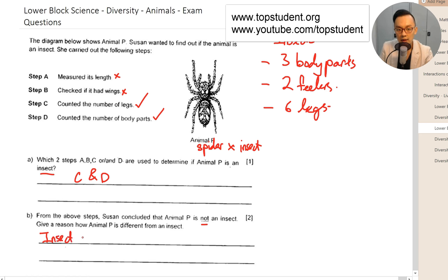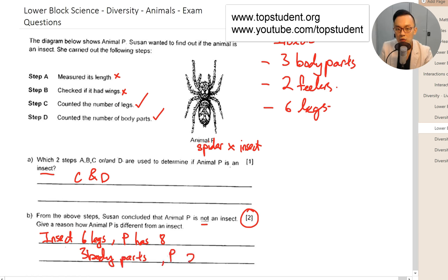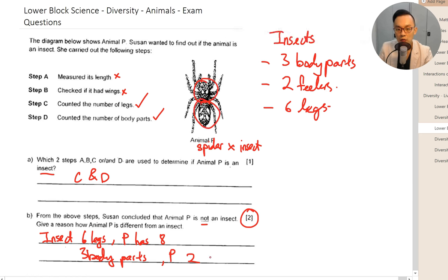Give a reason how animal P is different from an insect. This is a two-mark question, so you need to give two points. First: an insect has six legs, but animal P has eight legs. Second: an insect has three body parts, but animal P has two body parts.